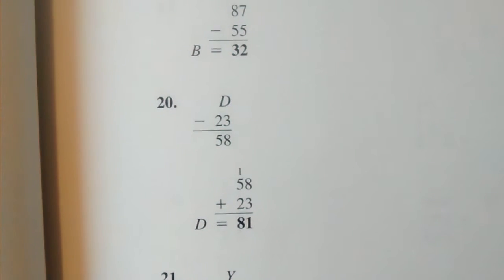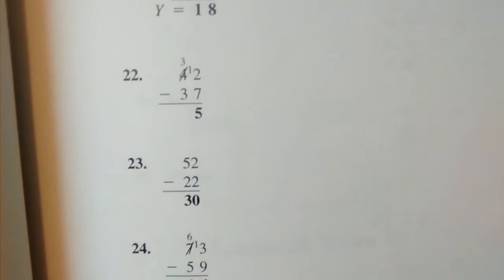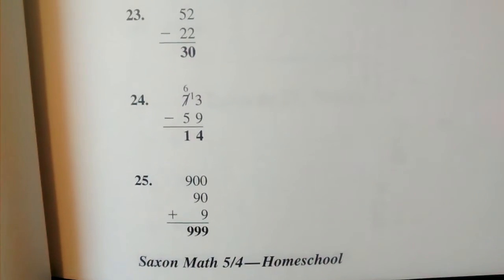20: D equals 81. 21: Y equals 18. 22: 5. 23: 30. 24: 14. 25: 999.